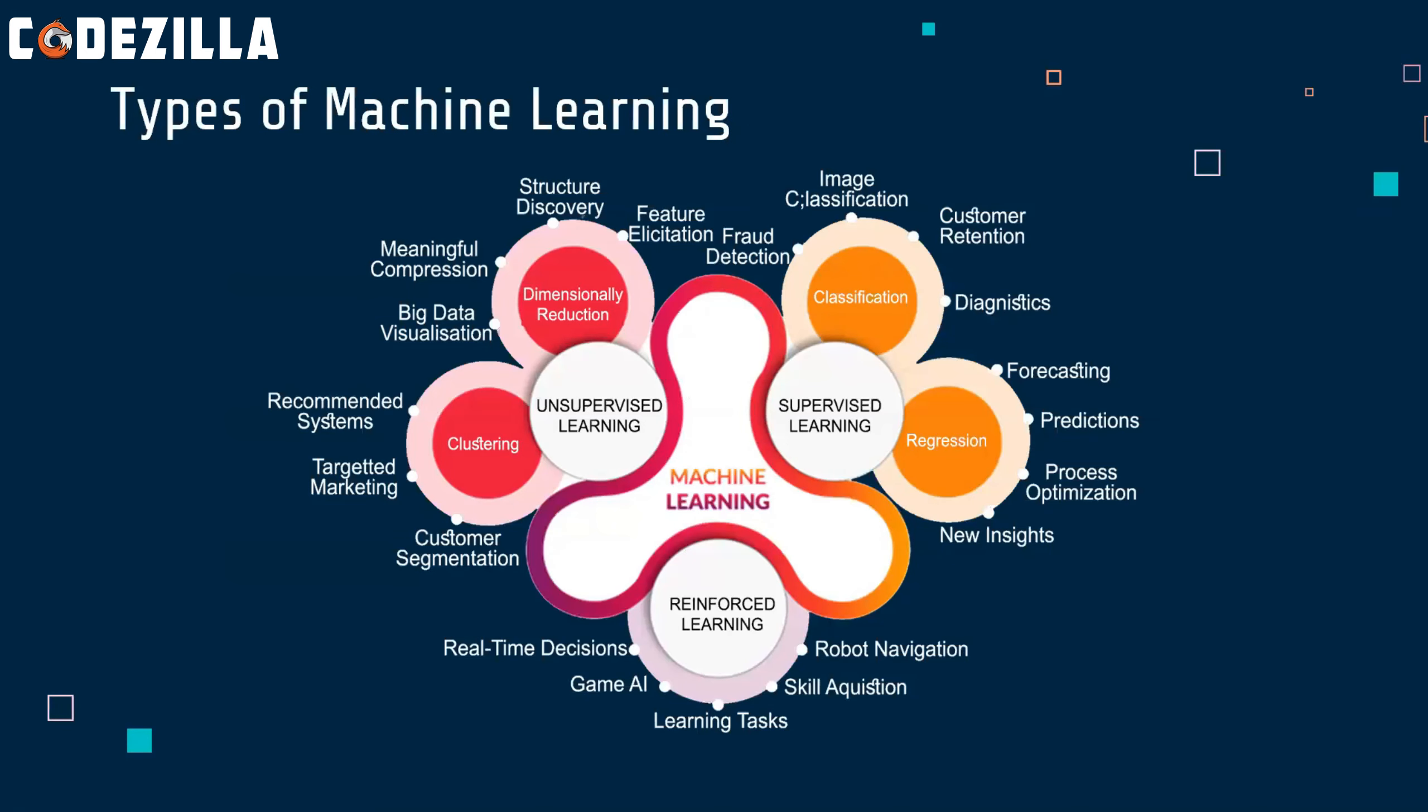So, machine is taught using three prominent methods. We have supervised, unsupervised and reinforcement learning.